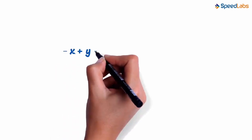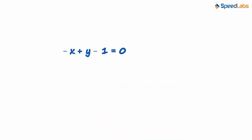Minus x plus y minus 1 equals zero. So how do we actually draw its graph? We need to draw the line of this equation using a graph paper.